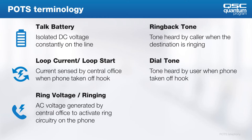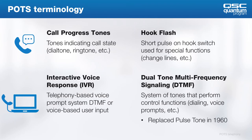It takes a relatively large AC voltage riding on top of the talk battery voltage to activate the ring circuitry in a given phone — this is called the ring voltage. When you take the phone off hook, you should hear a dial tone, which tells you the central office knows you're off hook and is ready to accept input. The ring back tone tells the original caller that the destination is ringing. Call progress tones include dial tones, ring back tones, and any other tones used to indicate what's taking place. The reorder tone is another example. A hook flash is a short burst on the hook switch that typically invokes special features on a line, like connecting a second call.